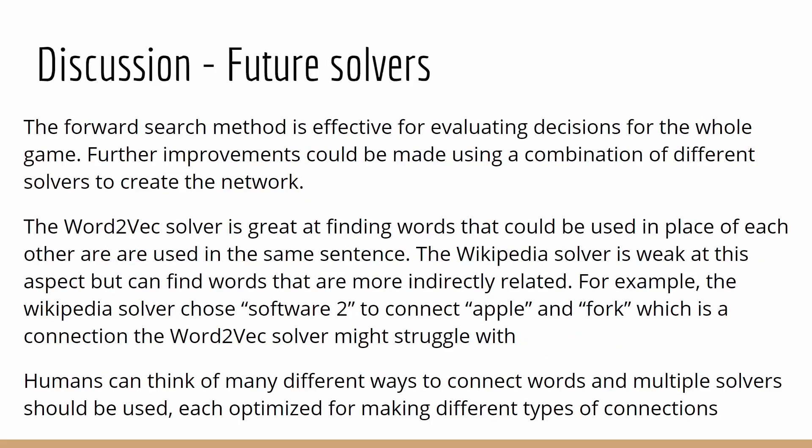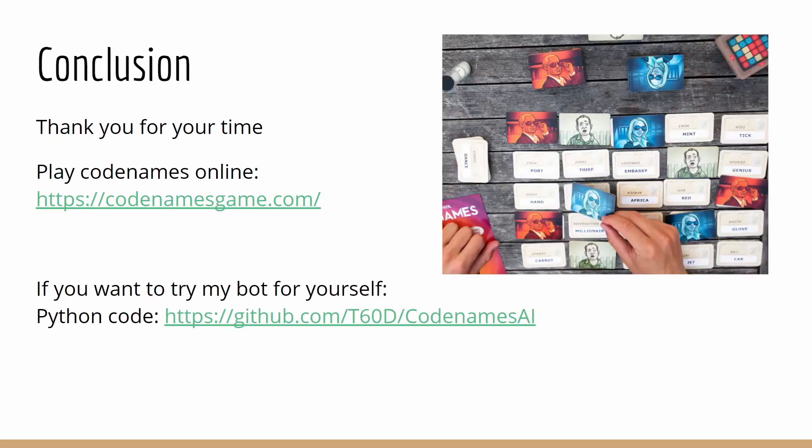For the future, the forward search method is effective at evaluating decisions for the whole game. Further improvements could be made using a combination of different solvers to create the network of words. Humans can think of many different ways to connect words, and multiple solvers should be used, each optimized for making different types of these connections. Thank you for your time. You can play Codenames online for free with your friends or family, and if you'd like to try the Spymaster bot for yourself, you can download it from my GitHub repository. Thank you.